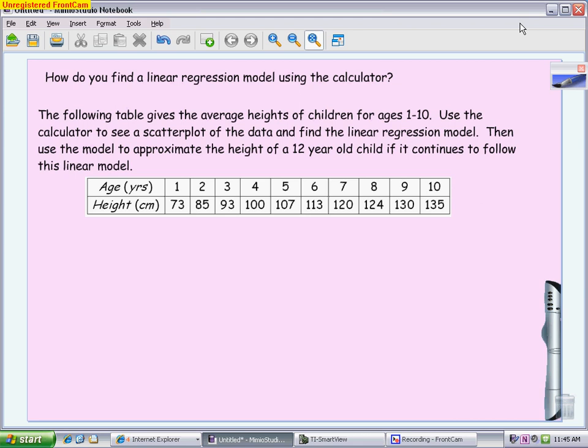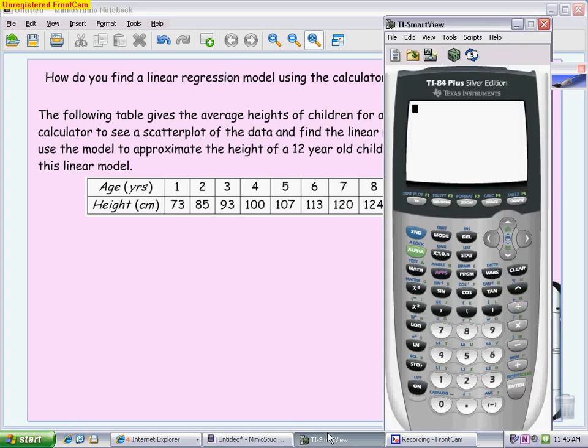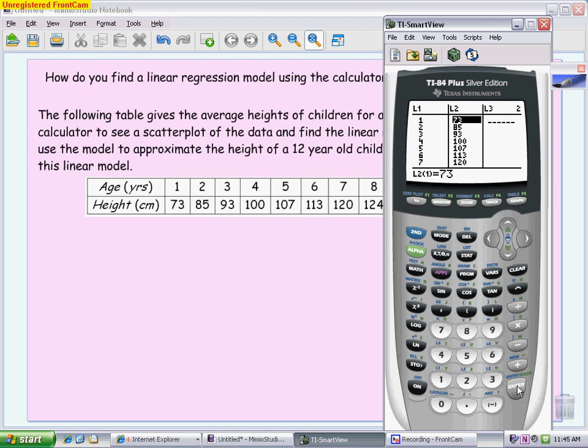The first thing you need to do with these problems is make sure your calculator is ready to input your data. To enter the list, you want to go to the STAT menu. In the STAT menu, you want the very first one, which is Edit. This is going to allow you to edit the lists that are there or input new lists if you have nothing there. When you look at this list, they might be completely empty. L1 and L2 should be the headings that you see. If your lists are empty, you're ready to start inputting your data.